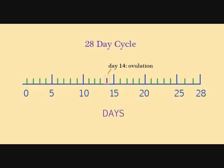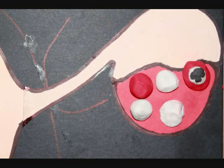At day 14, ovulation occurs and the secondary oocyte erupts from the ovary. The oviduct contains microscopic cilia that beat and draw in the released oocyte.